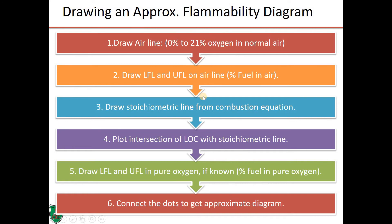To construct or to draw an approximate flammability diagram, we use a six-step procedure. The six-step procedure is first to draw the airline. The airline is the 0% to 21% oxygen in normal air. That is, we assume that we are using normal air for combustion. The second one is to draw the LFL and UFL on air line. That is, percent fuel in air.